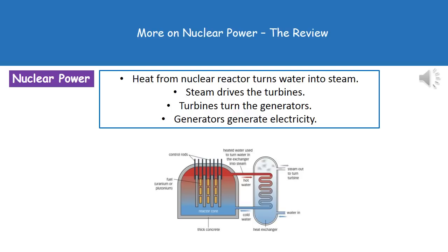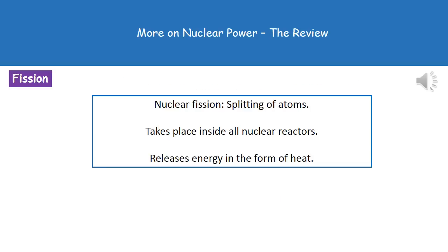The steam drives the turbines, the turbines turn the generators, and the generators generate the electricity. The name of the process going on inside our nuclear reactor is nuclear fission, which is the splitting of atoms. Do be careful with the spelling of fission.